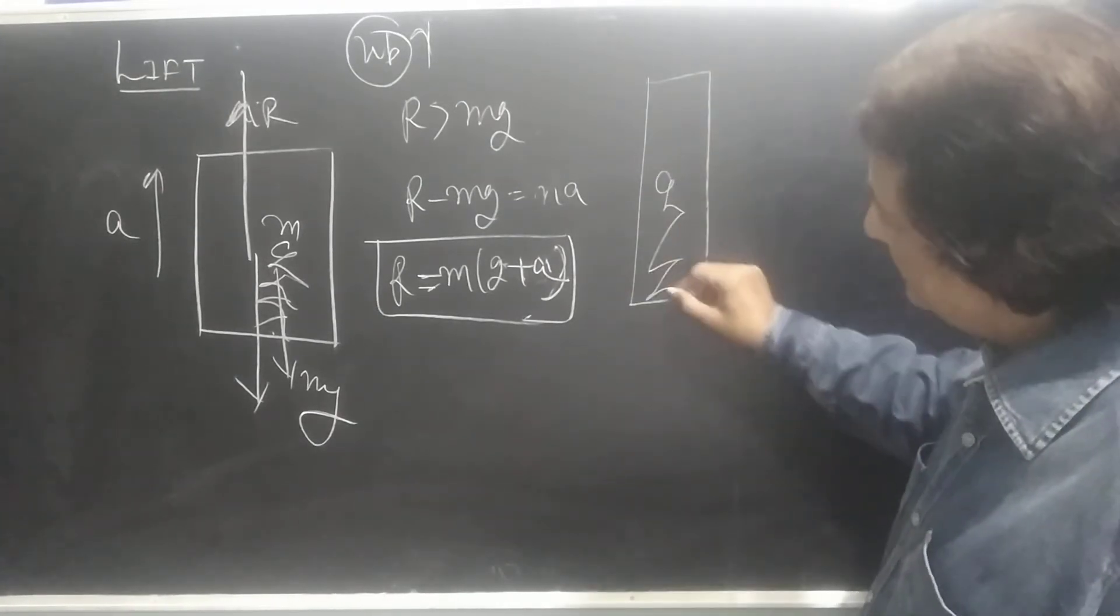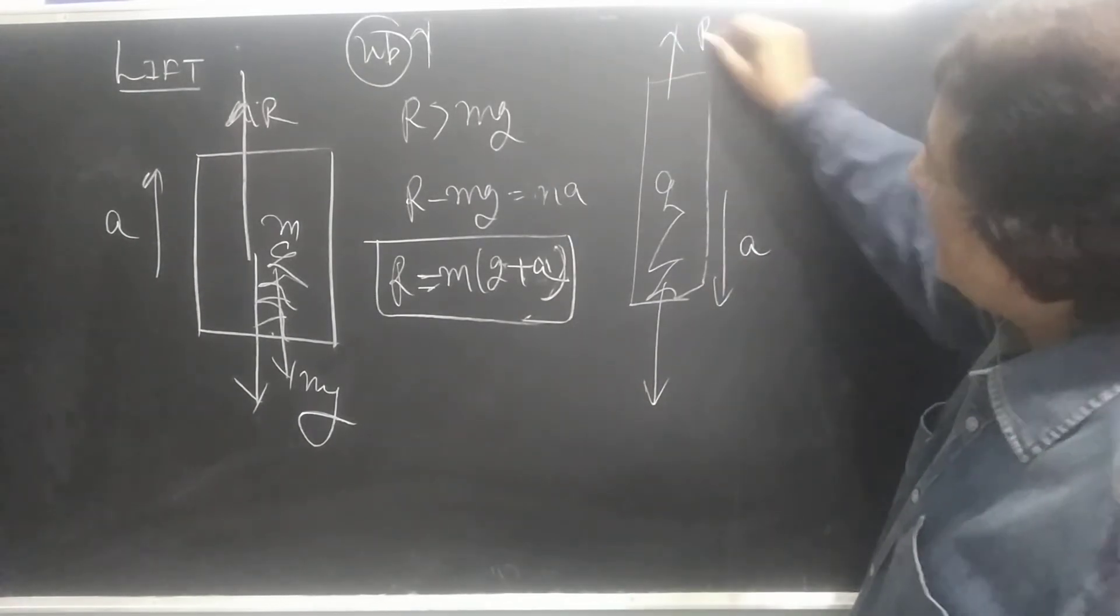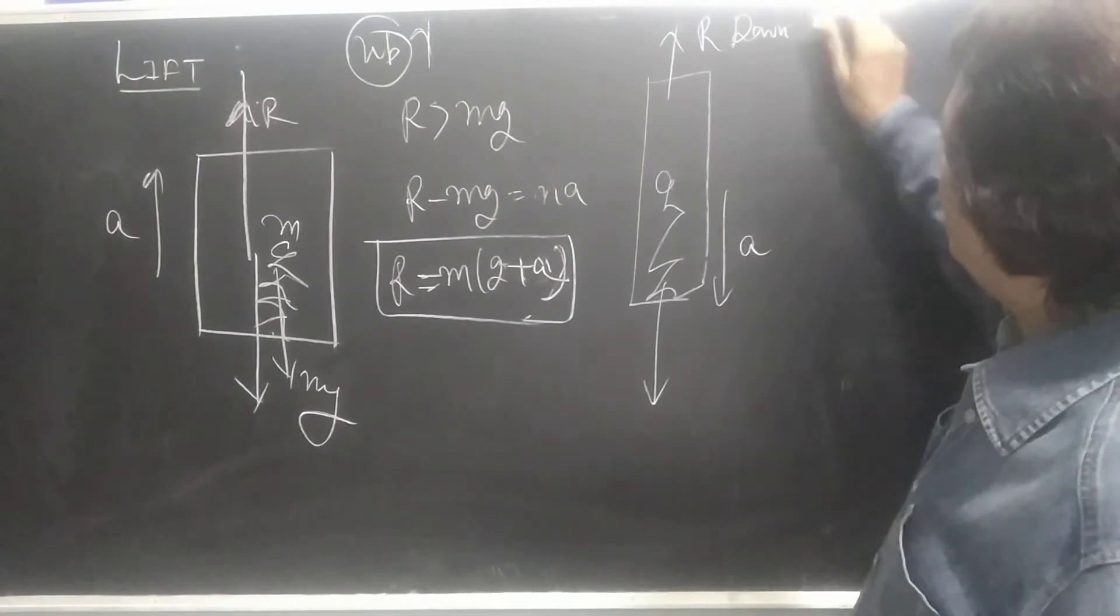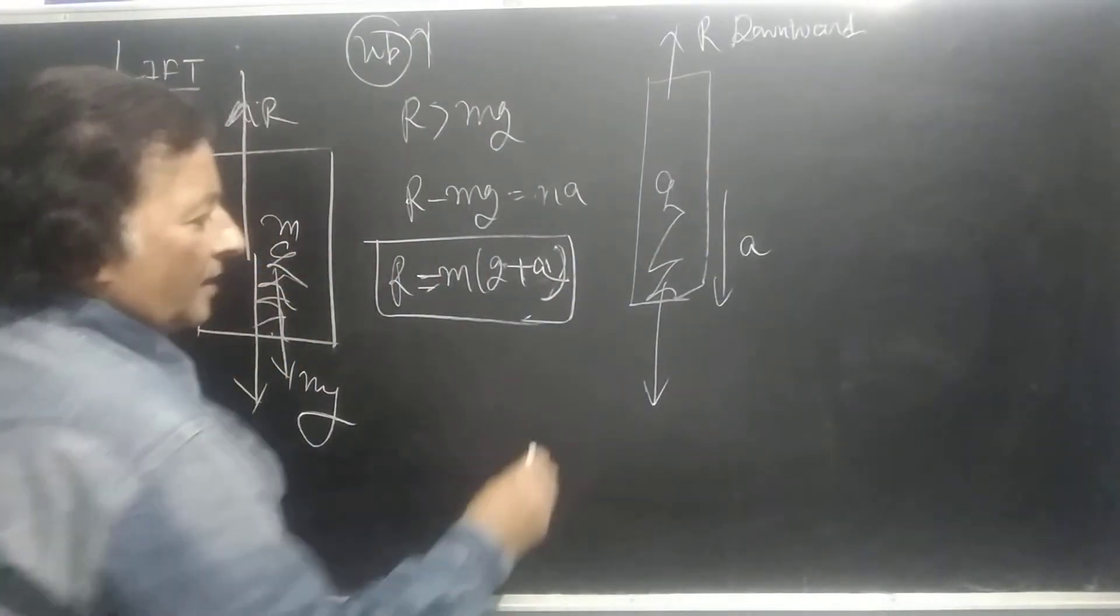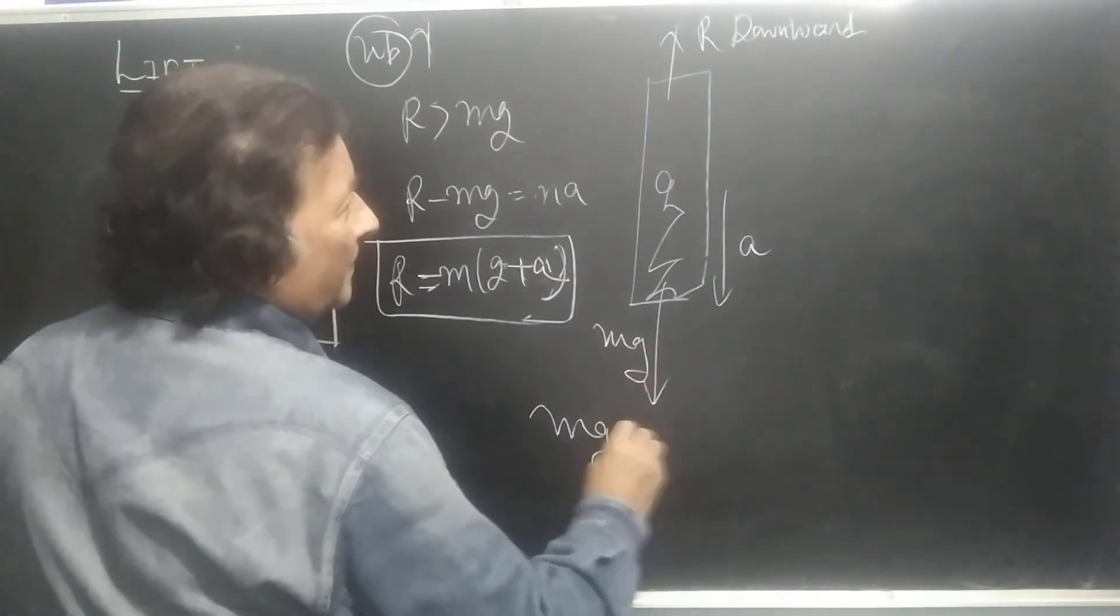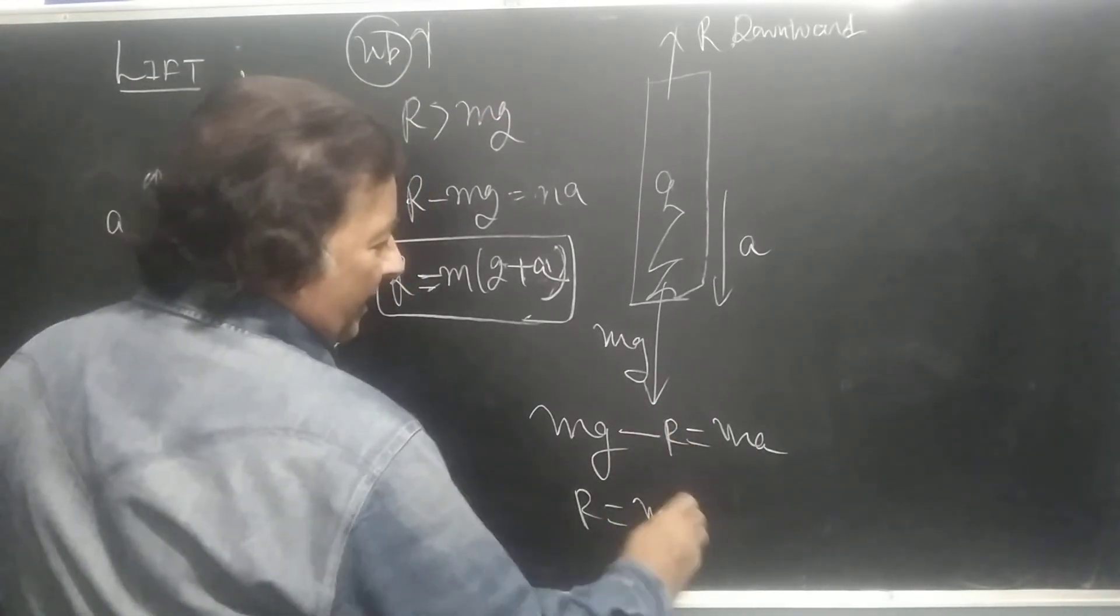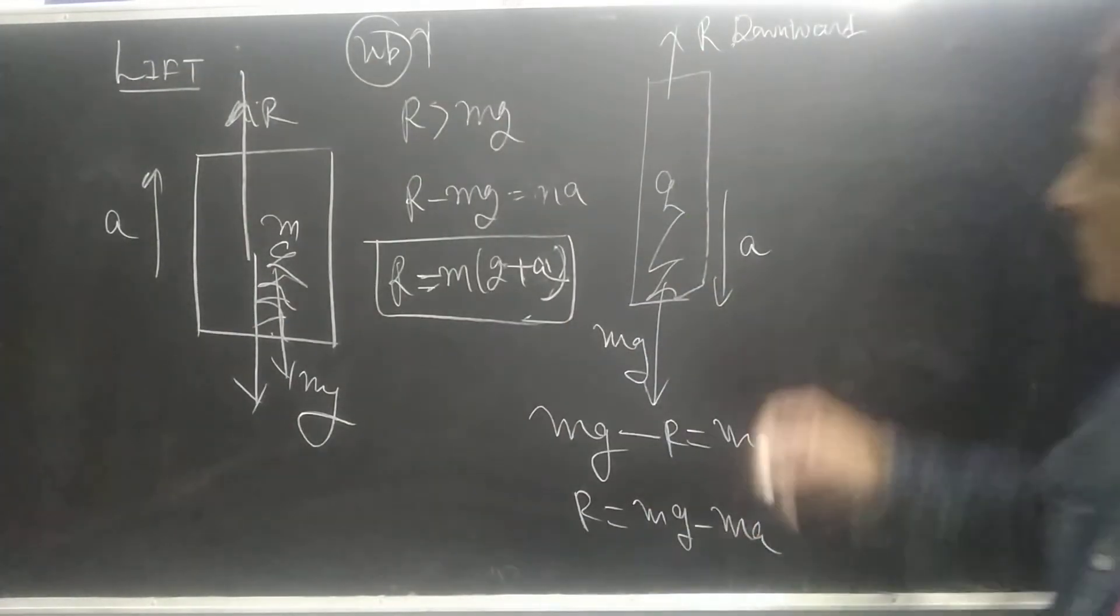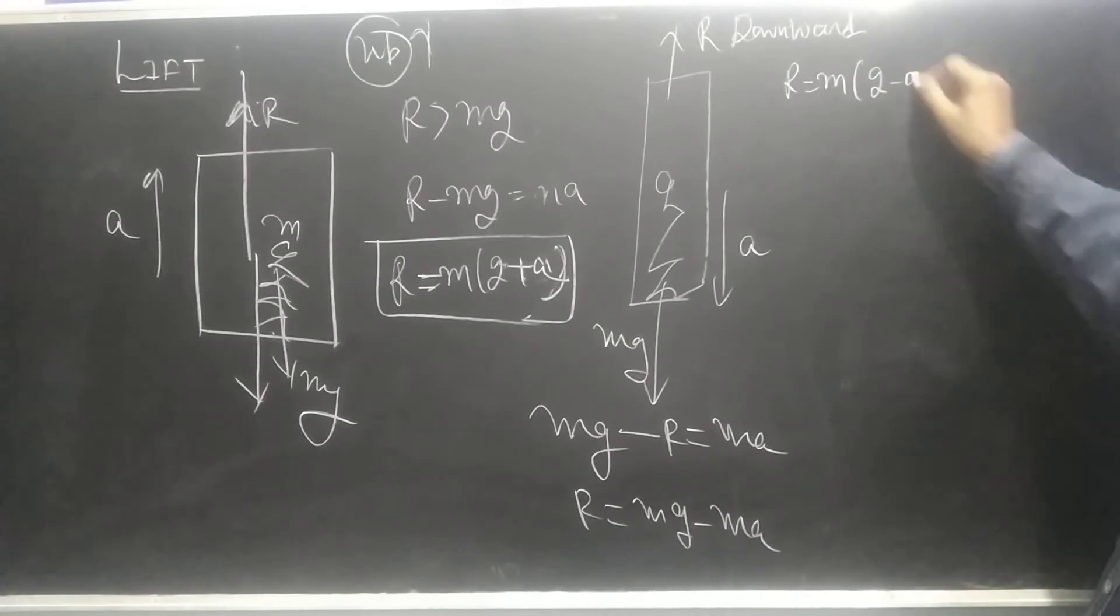With acceleration, normal reaction now we will figure out. We will make a motion downward. So what will happen is that Mg minus R equal to MA. So R is Mg minus MA. So R equals M into G minus A.